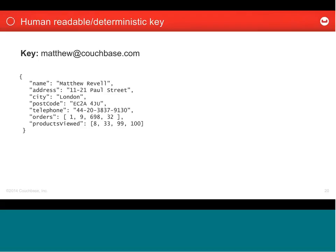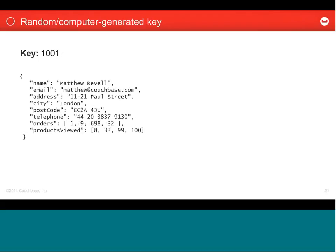What we could do instead is remove the loading on the key and completely separate the key from the email address. We use some kind of computer-generated key, and the email address itself moves into the document. That's great — I can now change my email address whenever I like. But it also means that if the key is 1001, how do we find that person's data doing a key lookup when they log in with an email address that no longer corresponds to the key?